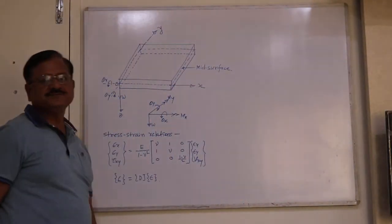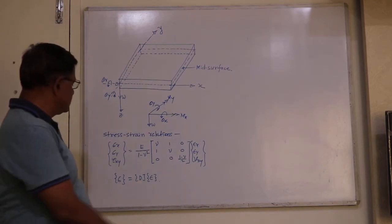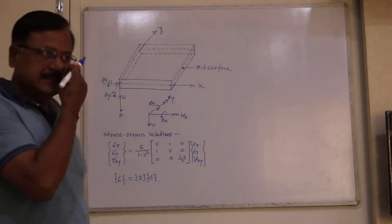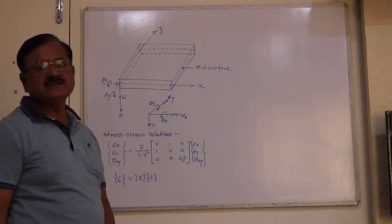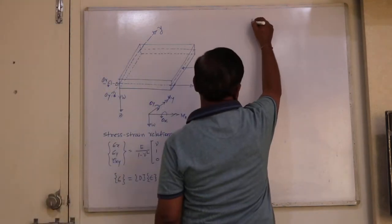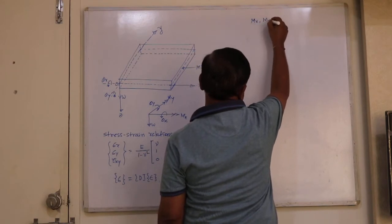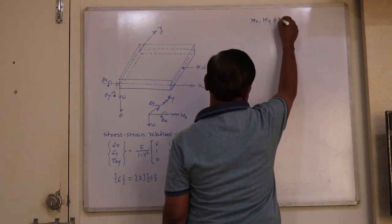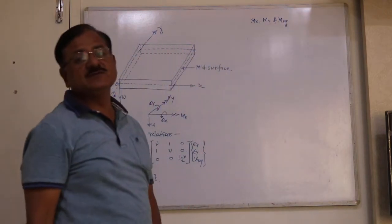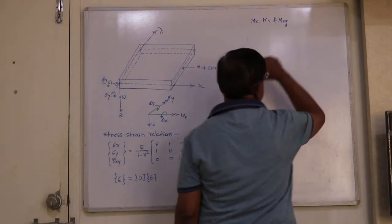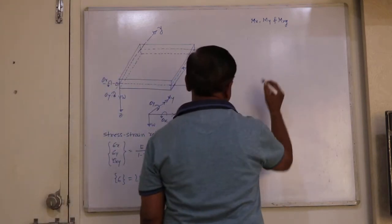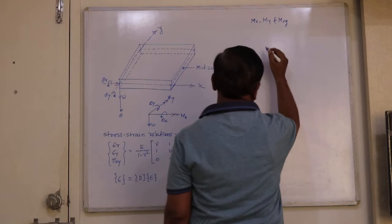Let us continue from here onwards. Last time we have seen the stress-strain relations, and these stresses give rise to the bending moments MX, MY, and MXY. This MXY is a twisting moment — it is a twisting bending moment. Now we have to calculate these moments due to the stresses, because this is the bending analysis of the plate.